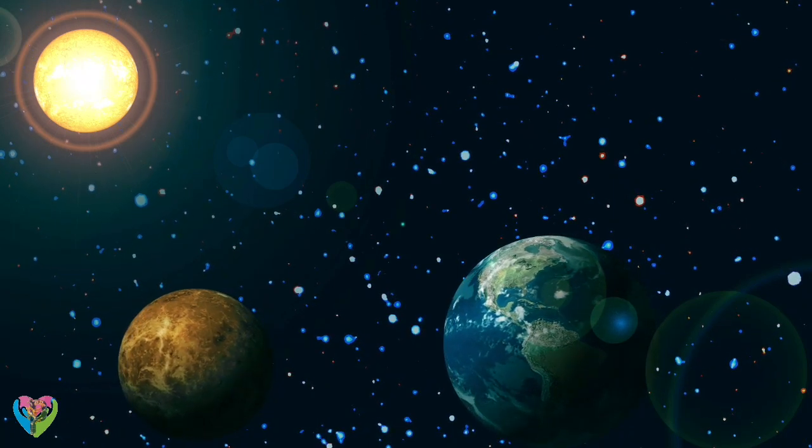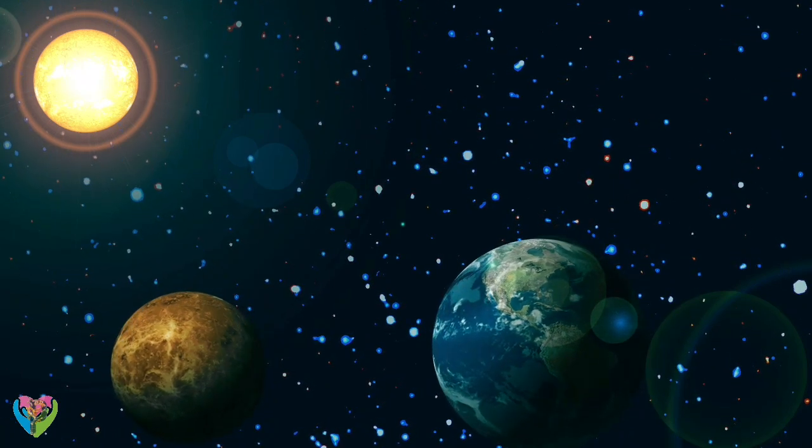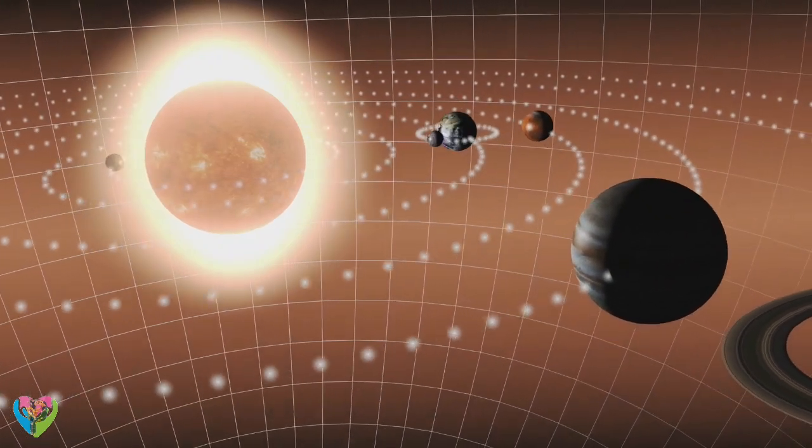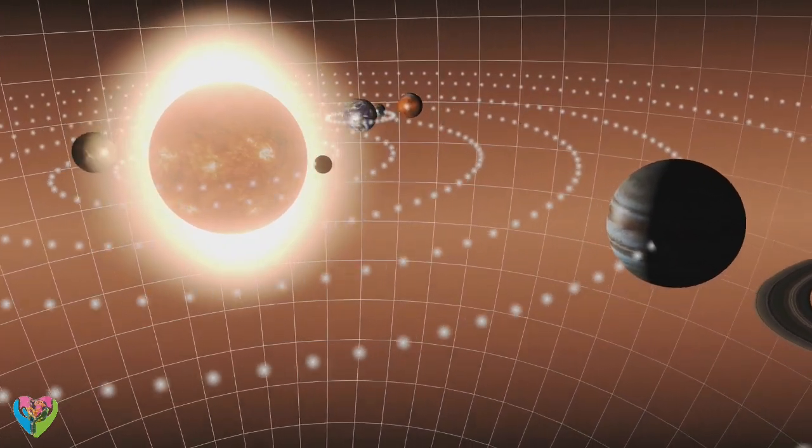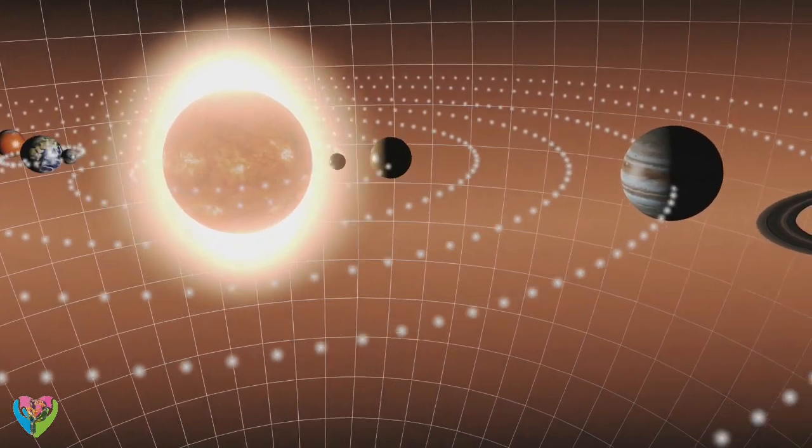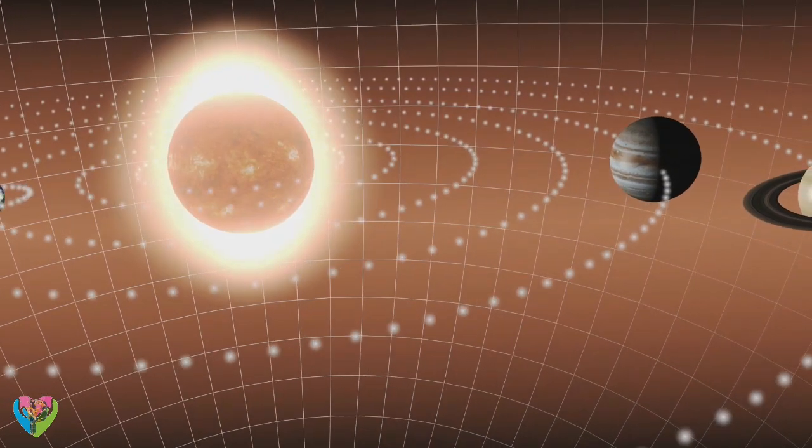Each of the giant planets and some smaller bodies are encircled by planetary rings of ice, dust, and moonlets. The asteroid belt, which lies between the orbits of Mars and Jupiter, contains objects composed of rock, metal, and ice.